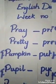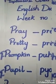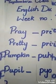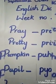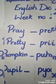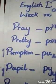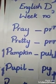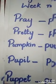Now we will learn their spellings one more time — spell these words with me. Our first word is 'Pray': P-R-A-Y, Pray. Our next word is 'Pretty': P-R-E-T-T-Y, Pretty. Our third word is 'Pumpkin': P-U-M-P-K-I-N, Pumpkin. Our fourth word is 'Pupil': P-U-P-I-L, Pupil.